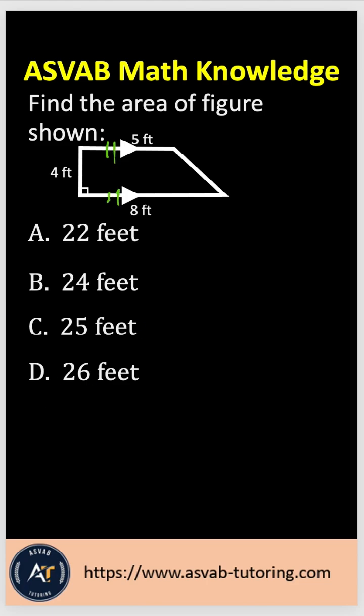If you want to find the area of the trapezoid, you need to know the formula. The formula is area equal to A plus B over 2 times H.